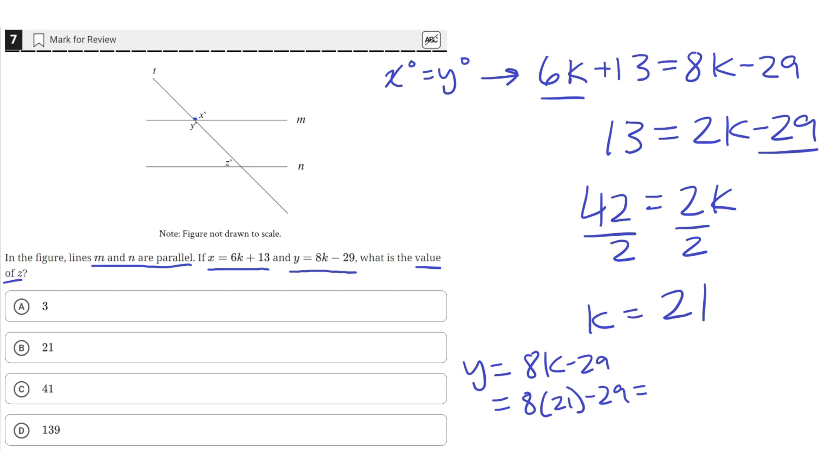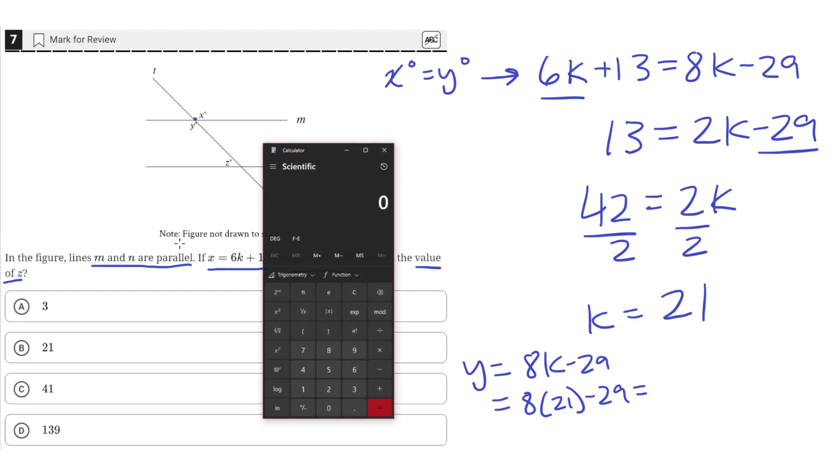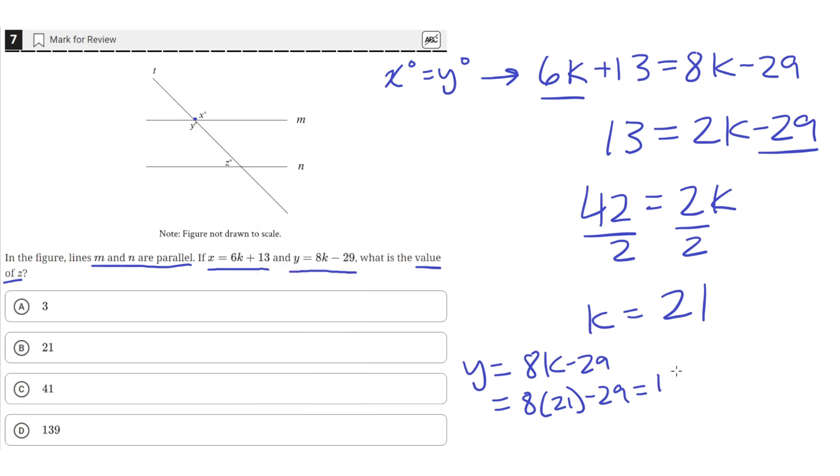When we put into our calculator, 8 times 21 is equal to 168 minus 29 equals 139. So the value of Y is 139.